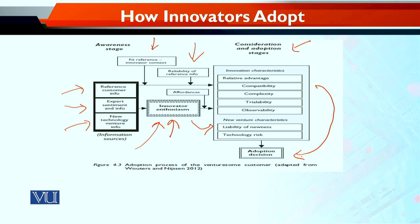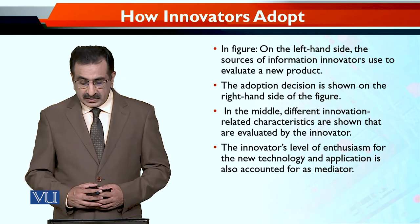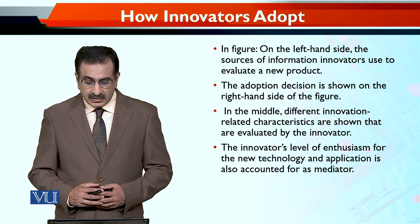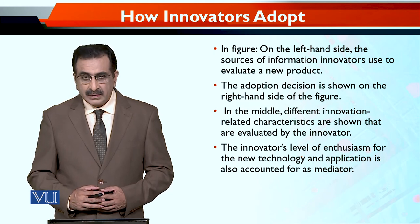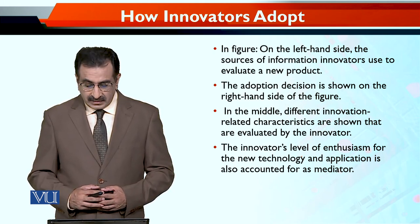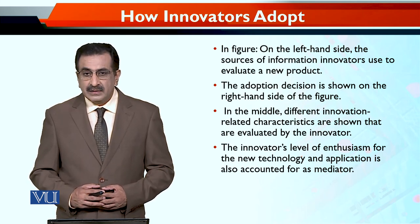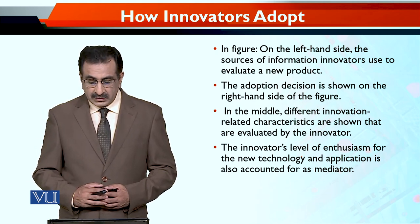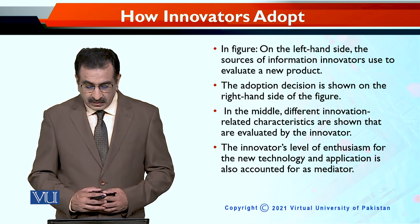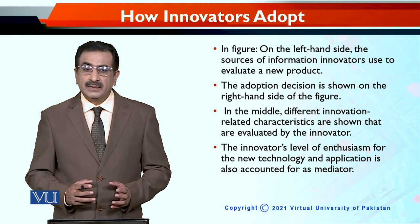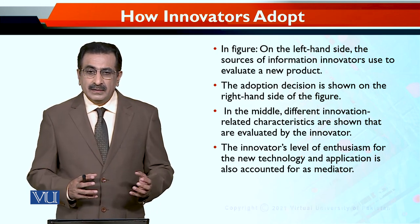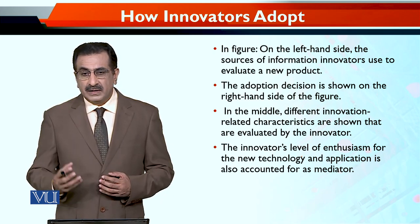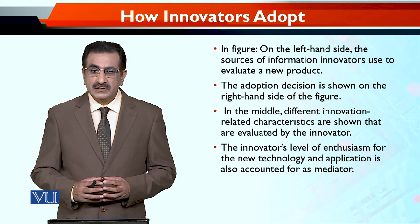In this figure, on the left-hand side — as we said — the sources of information that innovators use to evaluate a new product. The adoption decision is shown on the right-hand side of the figure, and in the middle, different innovation-related characteristics are shown that are evaluated by the innovator. The innovator's level of enthusiasm for the new technology and application is also accounted for as a mediator — वो mediate कर रहा होता है dependent variable और independent variable के दरान. अगर positive evaluation होती है तो उसका enthusiasm बढ़ जाता है, और उसके adoption of the technology के chances भी बढ़ जाते हैं.